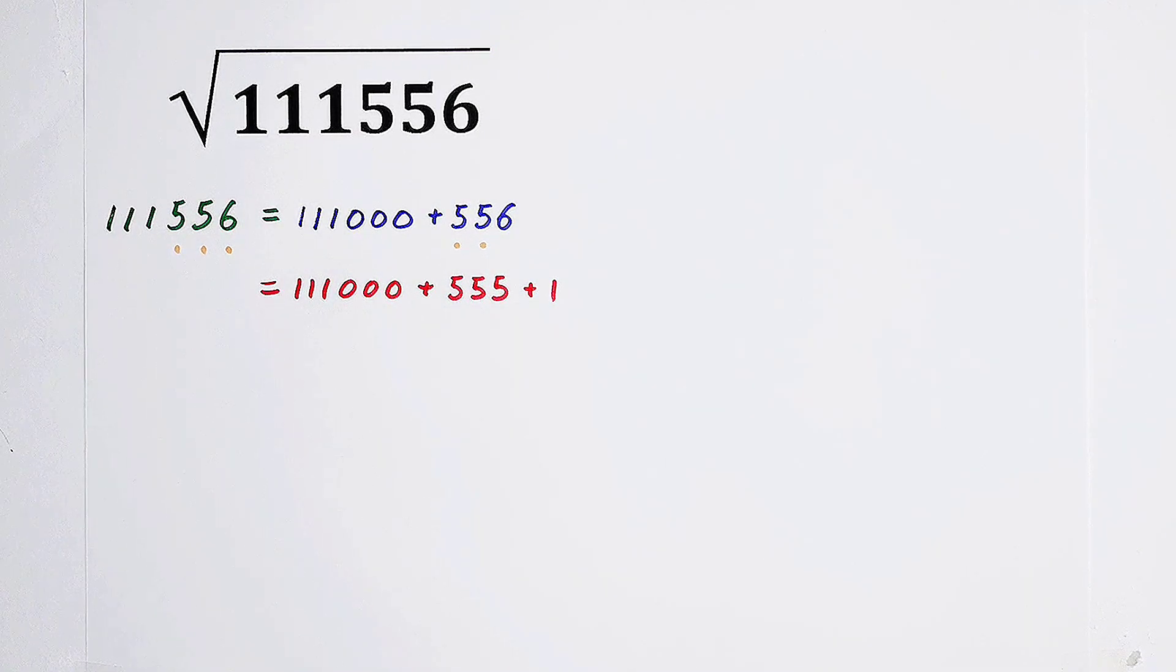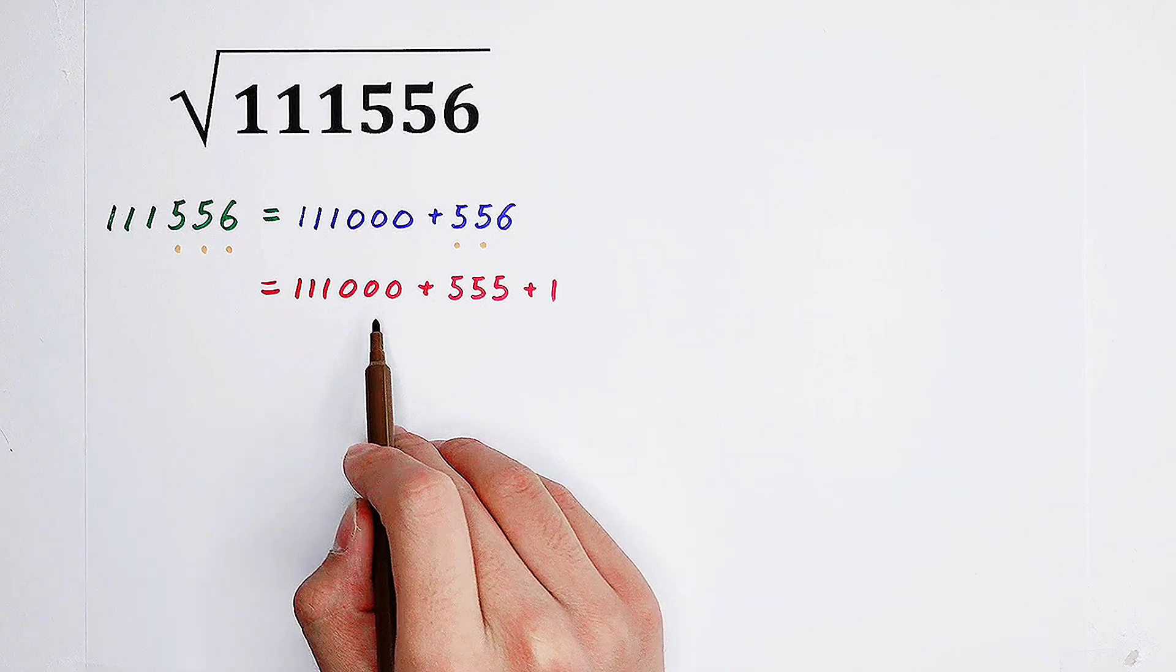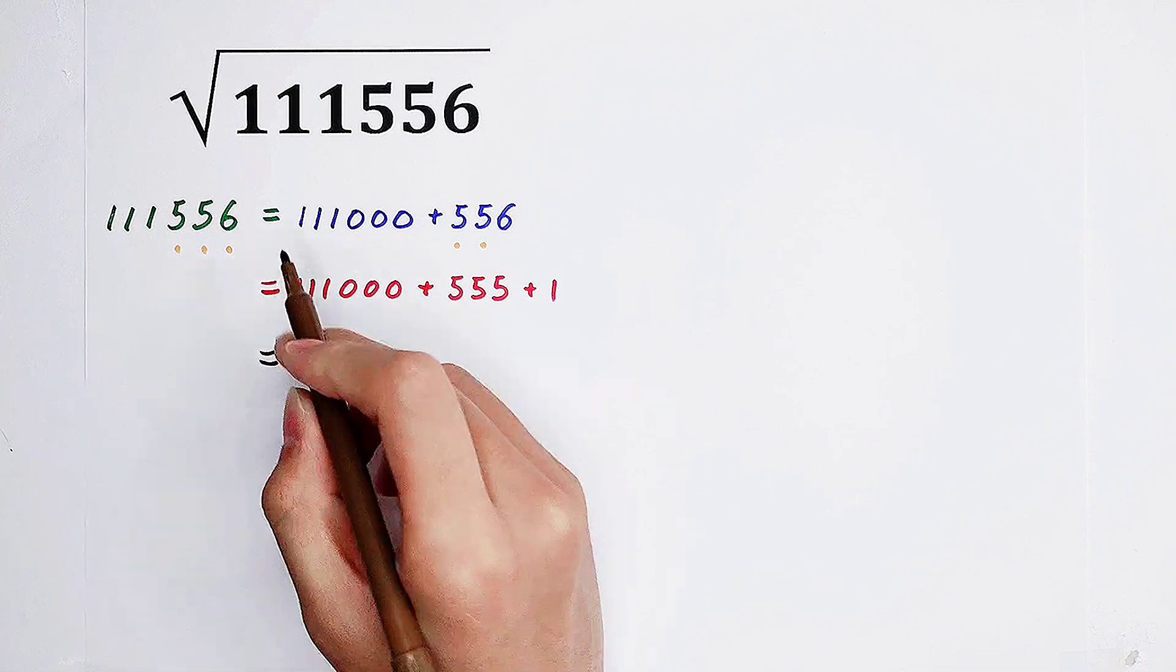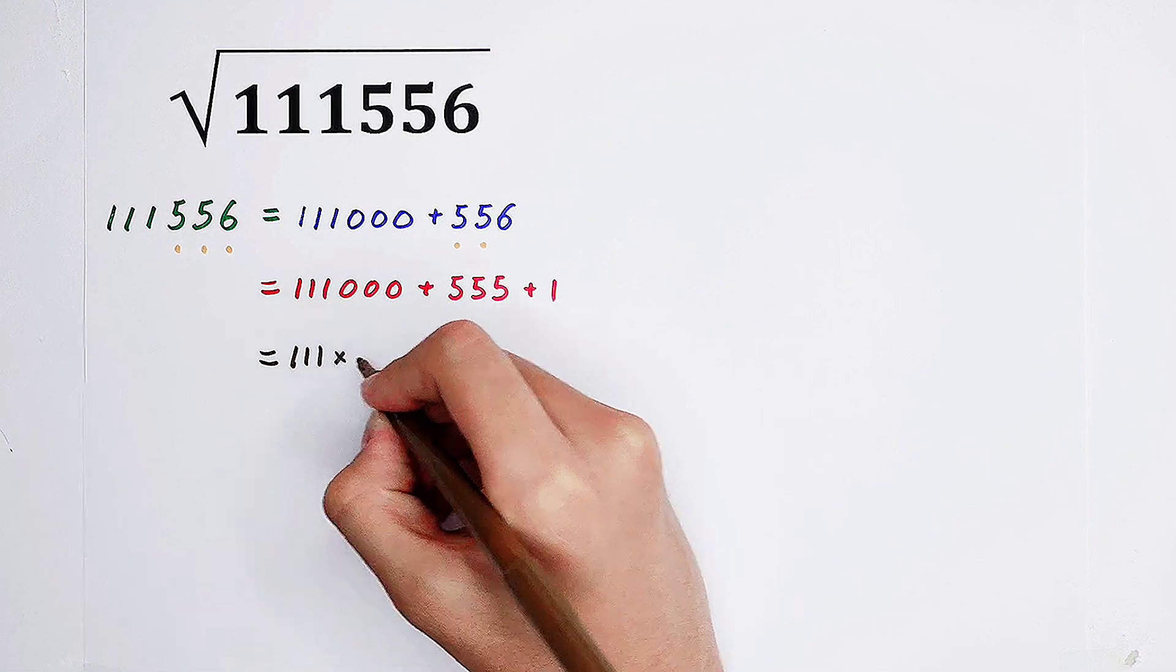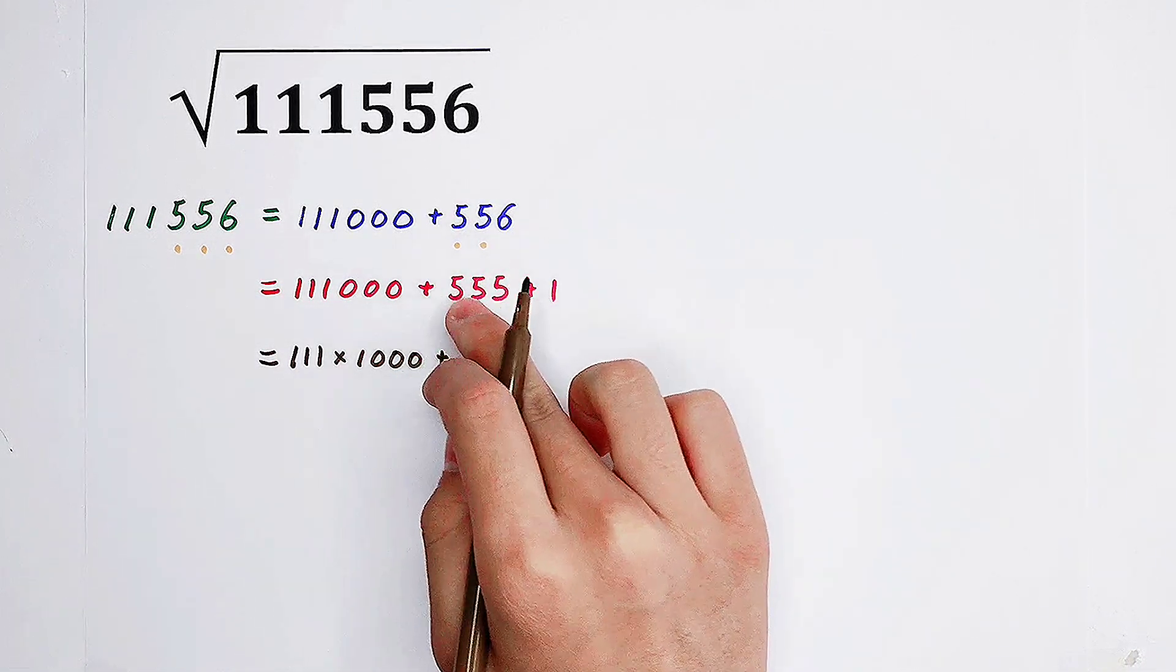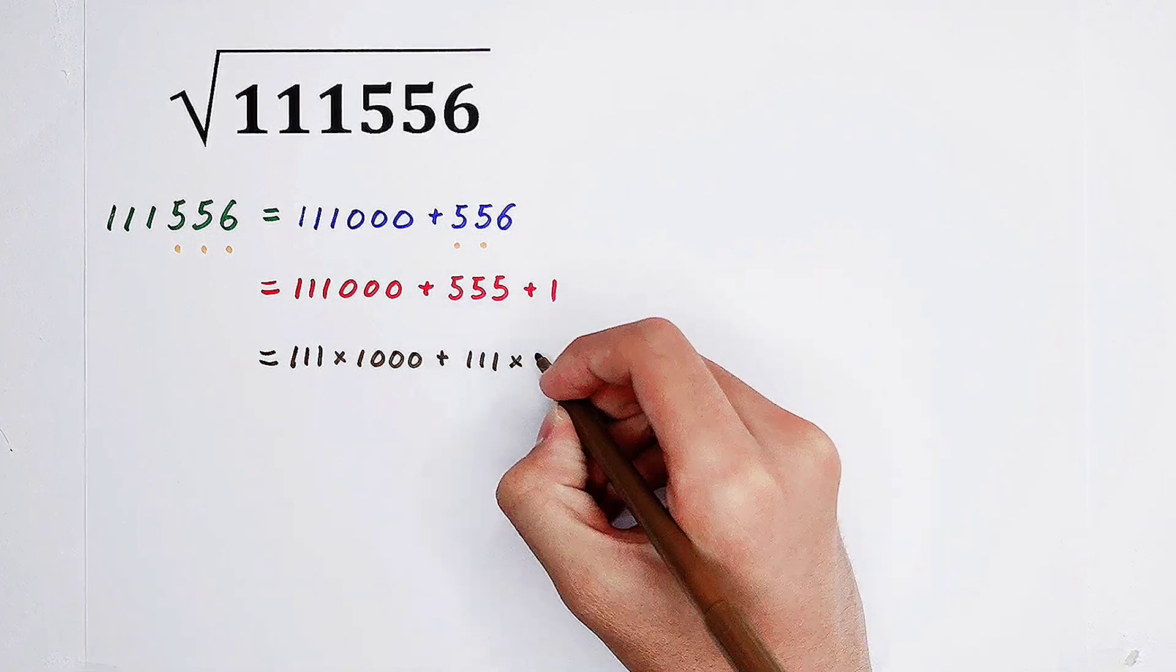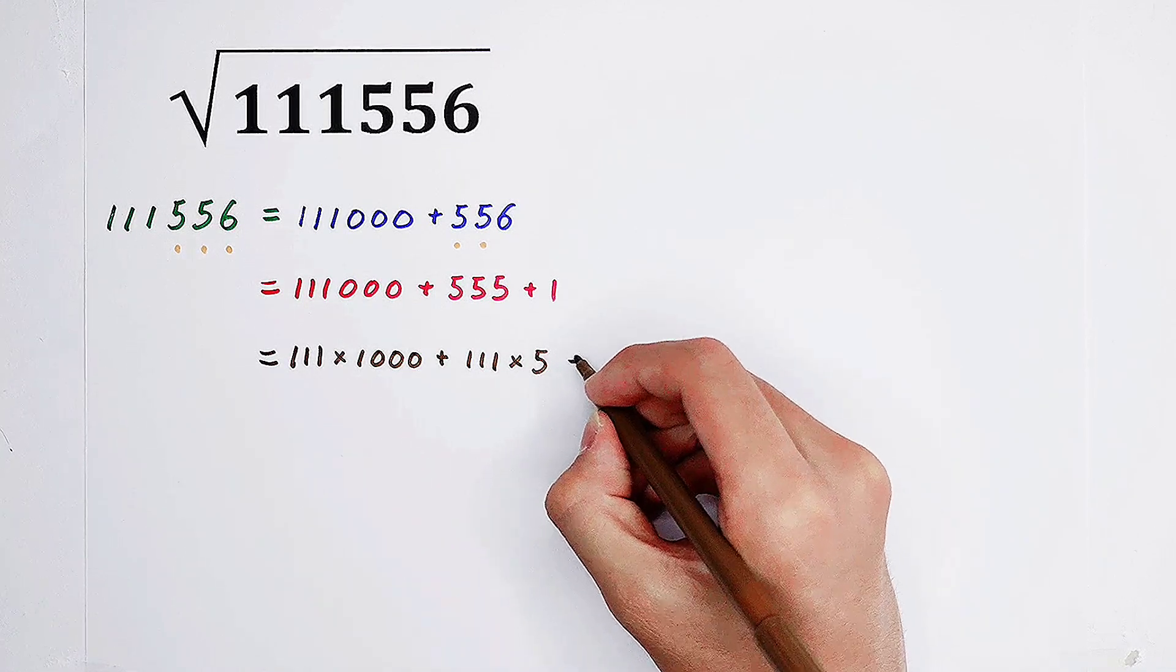What can we do? And what shall we do? Is the question. Here, three zeros, we don't like it. We can write 111,000 as 111 times 1,000. Of course, 555, it is 111 times 5. And here, plus 1.